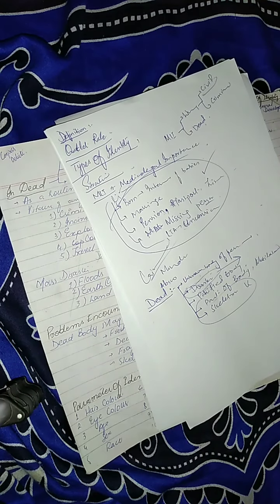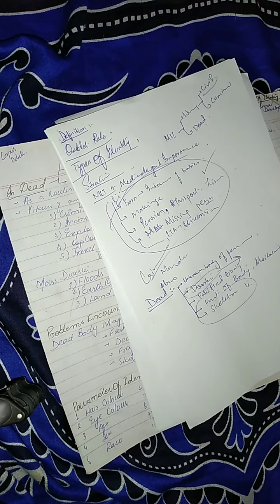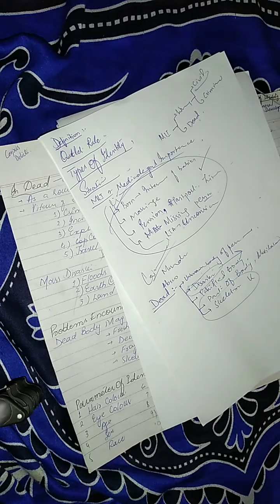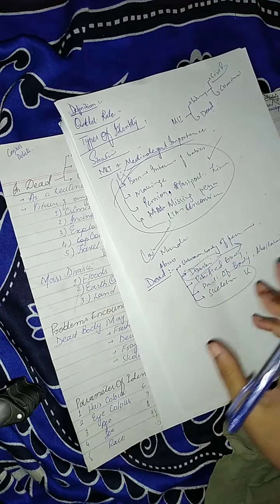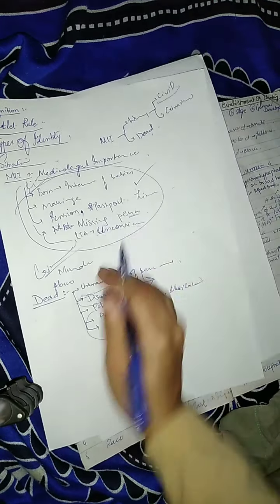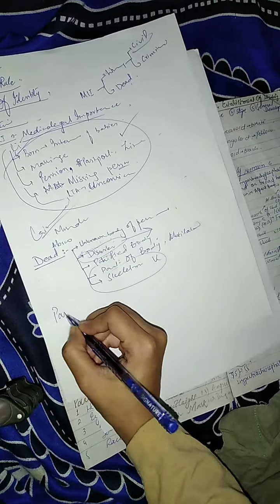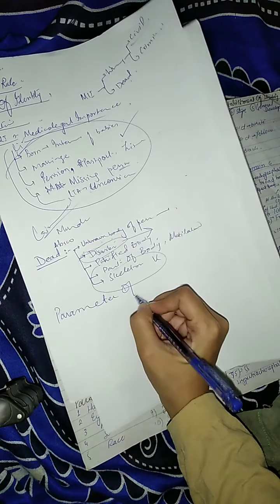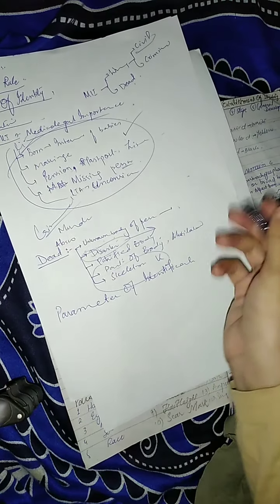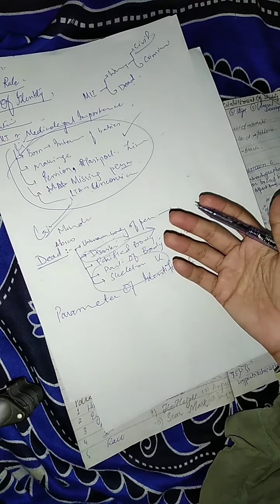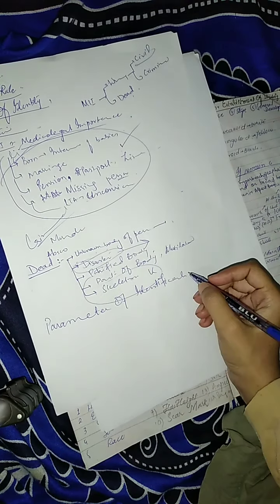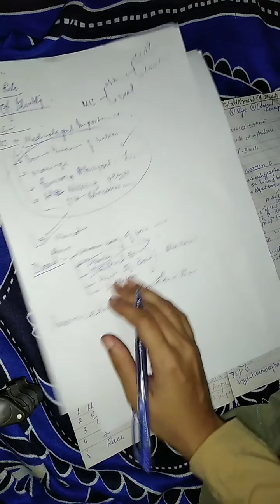Now we are going to get to our actual topic. We have a body. Let's start with the body. So we will start to know what we will do so that we will know the identity. We call it the parameters of identification. Which are the parameters?